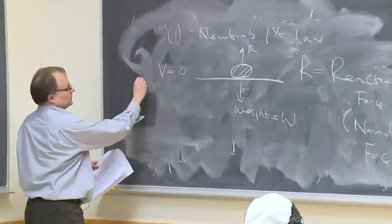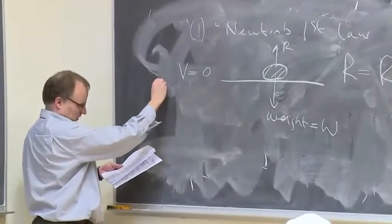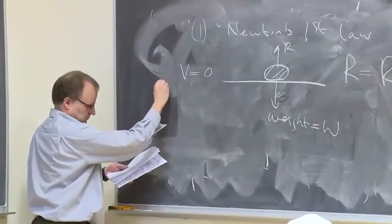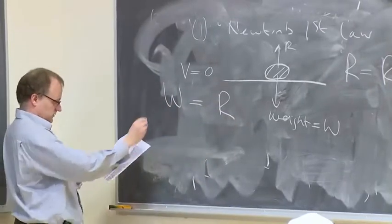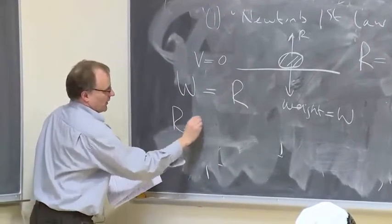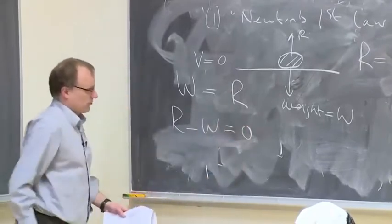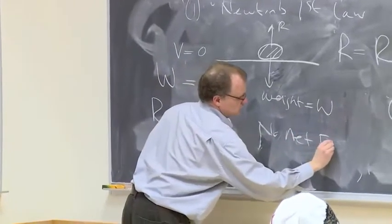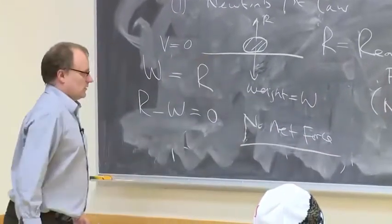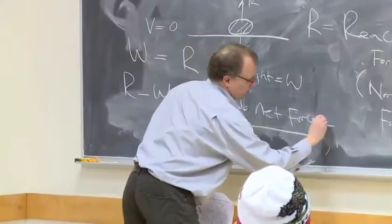In this situation, we would have W is equal to R. So we can say that R minus W is zero. There's no net force. And therefore, the velocity is zero.